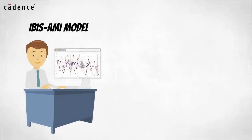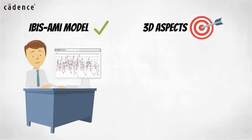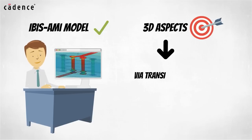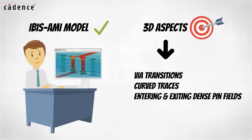With the IBIS AMI model problem resolved, you will have plenty of time to focus on the challenging 3D aspects of serial link channel design such as VR transitions, curve traces, and entering and exiting dense pin fields on large devices that can make or break your channel design.